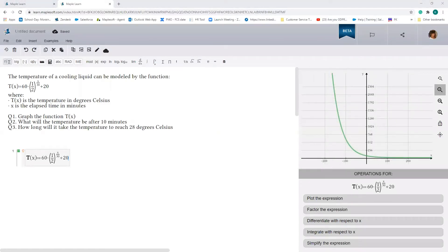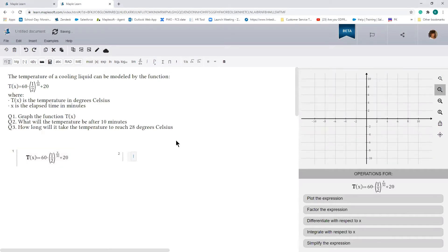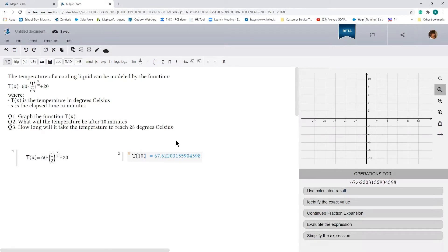Now question 2 asks us to determine the temperature after 10 minutes. We can do this easily by plugging the value of 10 into the function that we defined. So let's do that. We want t at 10 minutes, which is approximately 67.62 degrees Celsius. Let's go ahead and write that answer out.